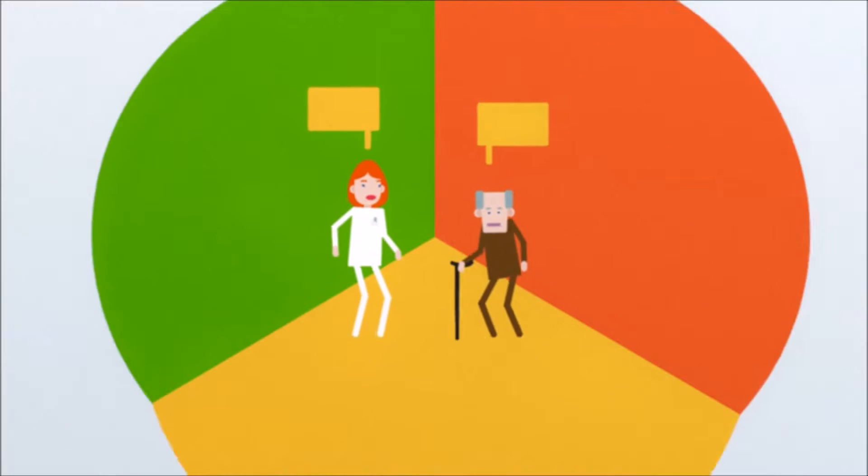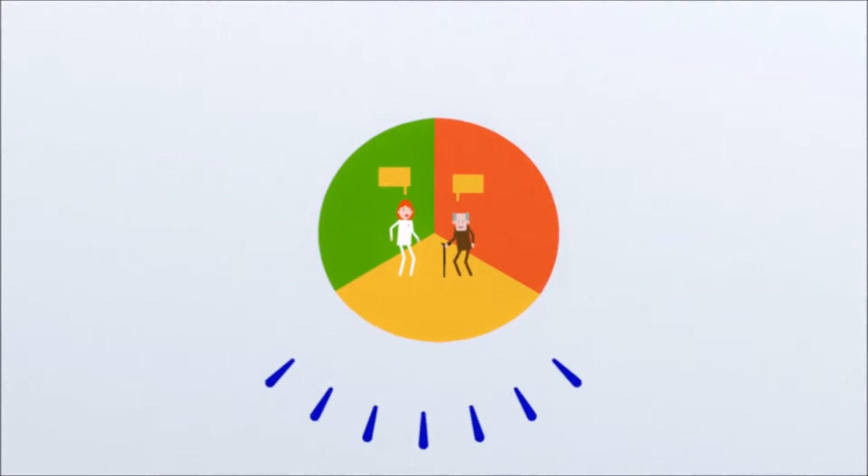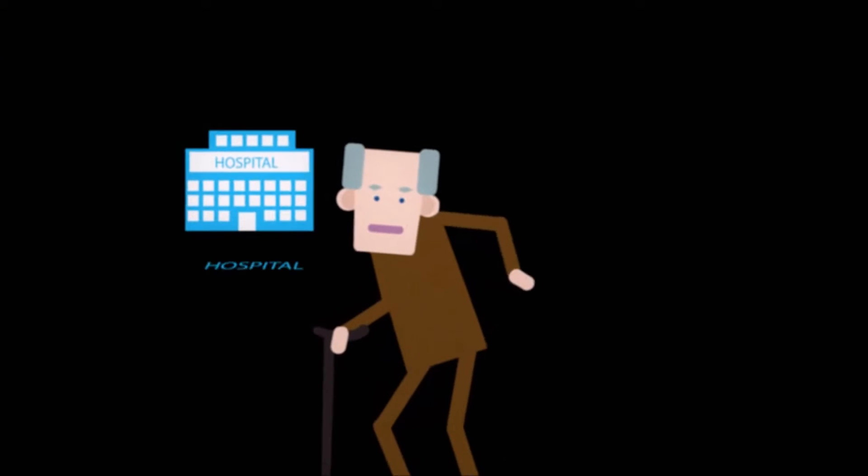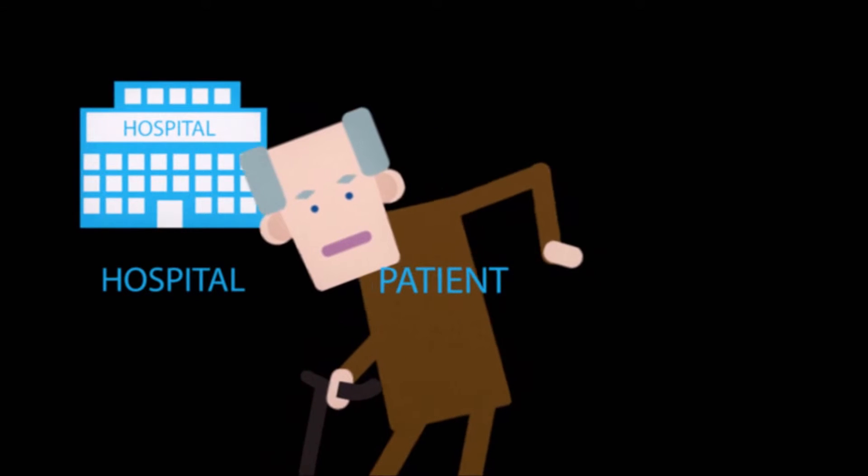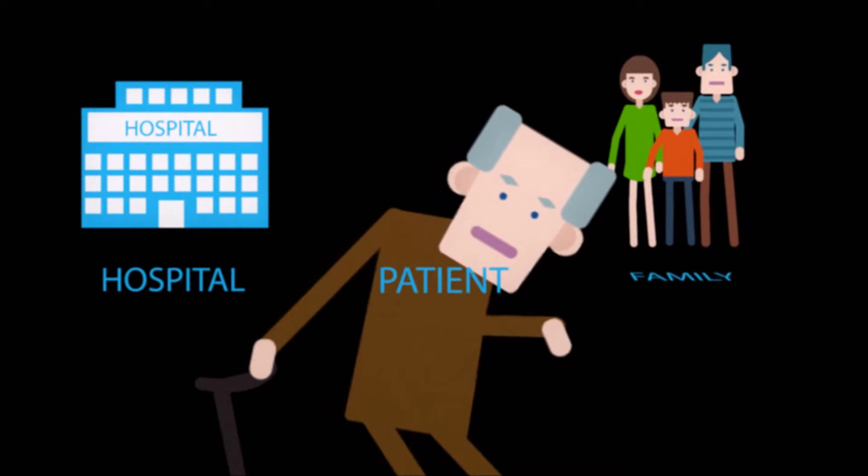This consult consists of three parts. In the first part, the nurse informs the patient about the procedure in the hospital, what the patient will experience, and what the patient and family can and should do.